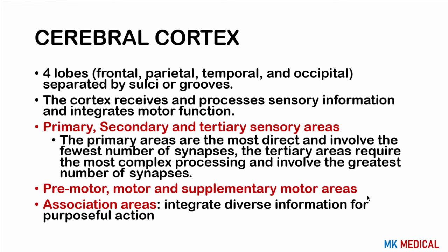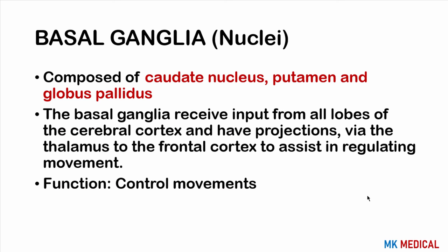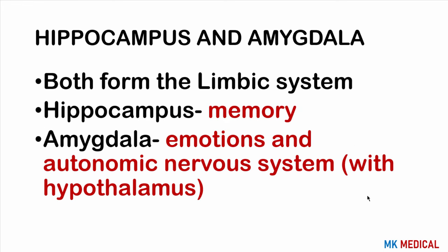The cortex has primary, secondary, and tertiary sensory areas. Primary areas are most directly involved with the fewest synapses, while tertiary areas require the most complex processing with a very large number of synapses. The brain also has premotor areas, motor areas, and supplementary motor areas functioning in movements of the body. Association areas integrate diverse information for one purpose or action.